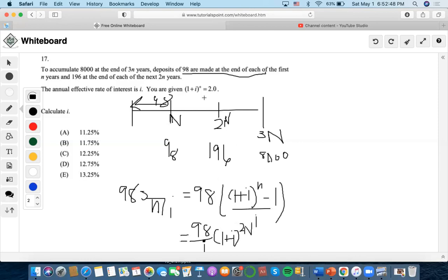Now we're given that this equals 2, so we're going to do 2 squared which is 4. Now we're going to do 4 times 98, and we'll end up getting 392 over I.